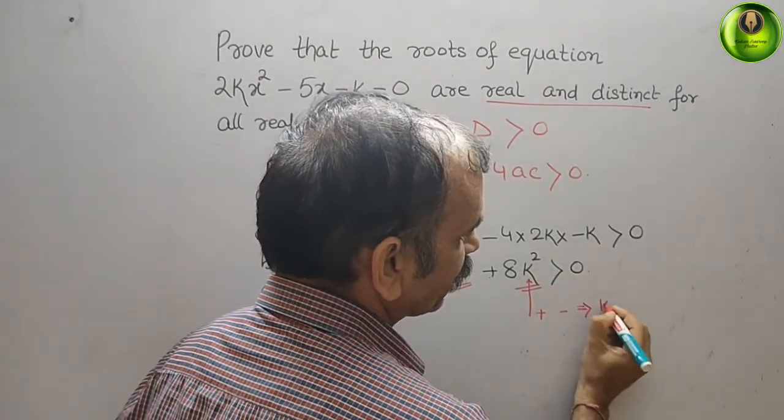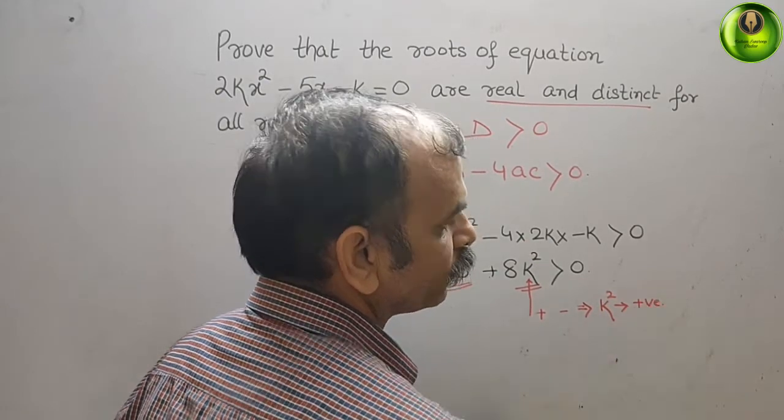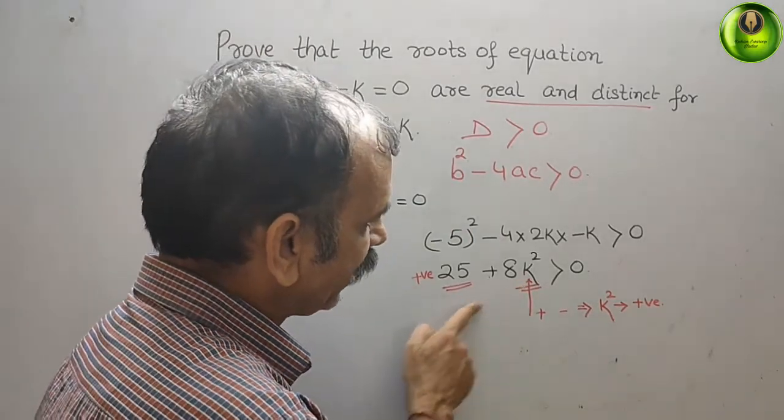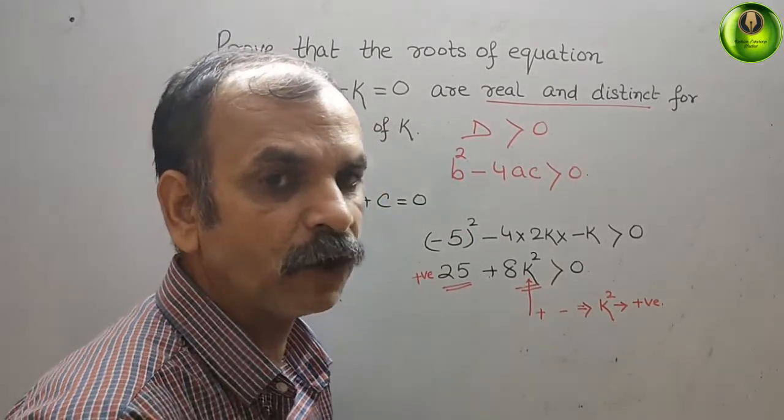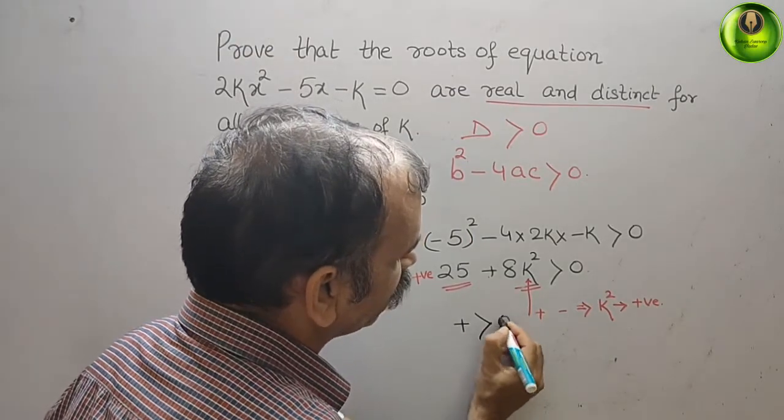Therefore, we can say k² is positive. Therefore, you can see this left side is positive always. So we can say positive is always greater than 0. It's true.